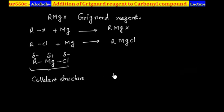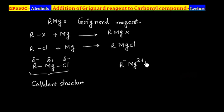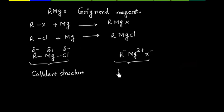For our purpose in organic chemistry, to write reactions, we treat Grignard reagent as a completely ionic compound. In that case, we will have R⁻, Mg²⁺, and X⁻. So this is the ionic structure of Grignard reagent.